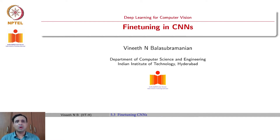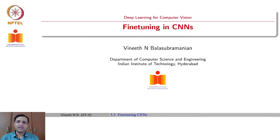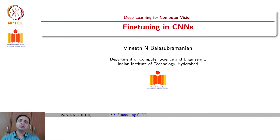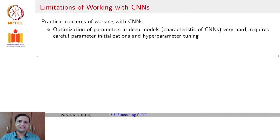In this lecture, we will talk about an important aspect of CNNs that allows us to design architectures for newer tasks or newer domains, given an architecture that works on a particular domain. For example, if we know AlexNet works on the ImageNet dataset, how can we leverage that knowledge to develop a model for another domain or another task? To discuss this, let us start with the limitations of CNNs themselves.